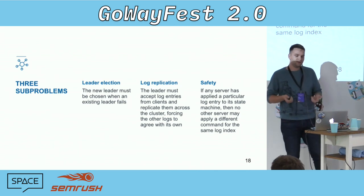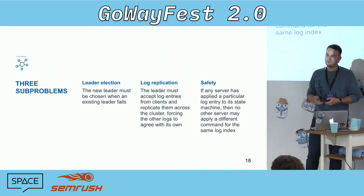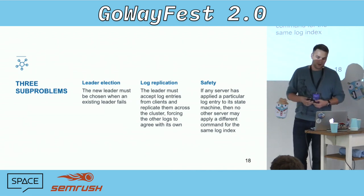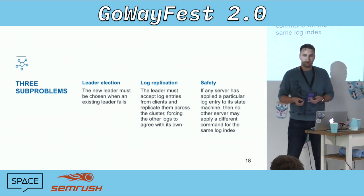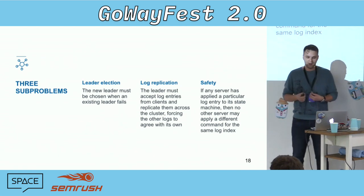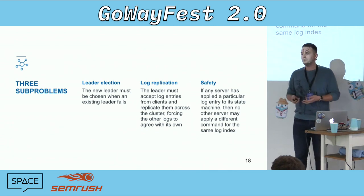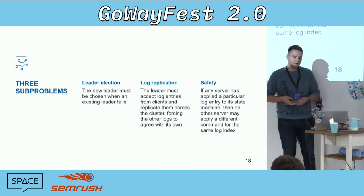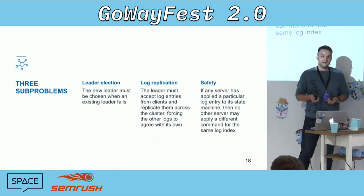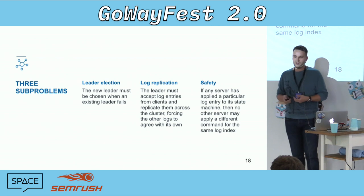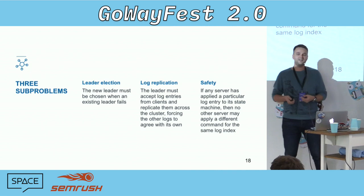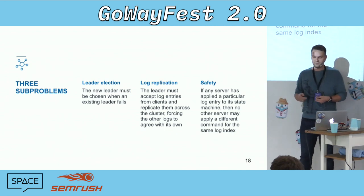The first sub-problem is leader election: a new leader should be elected when an existing leader fails. The second is log replication: the leader must accept log entries from clients and replicate them across the cluster, forcing other logs to agree with its own. The third is safety: if any server has applied a particular log entry to its state machine, no other server may apply a different command with the same log index.